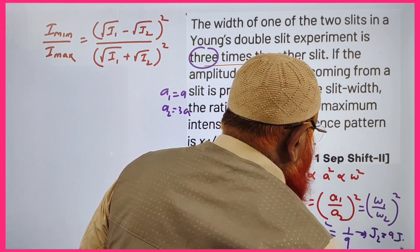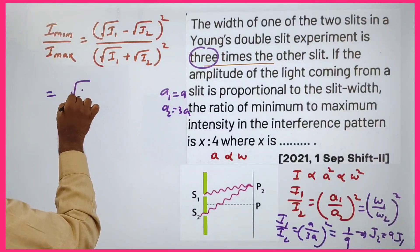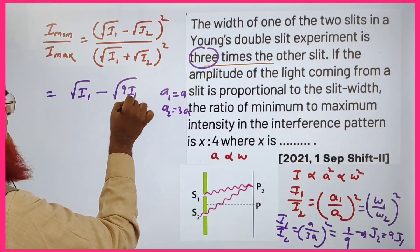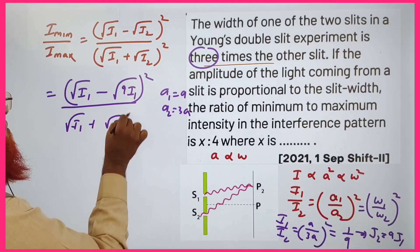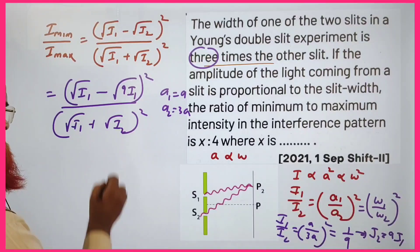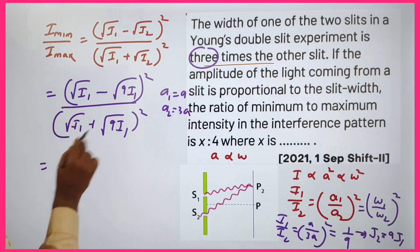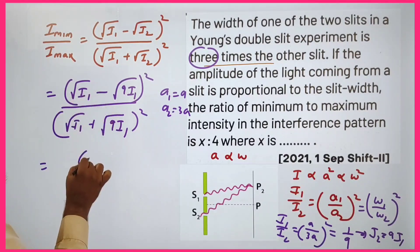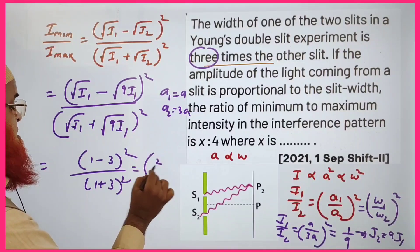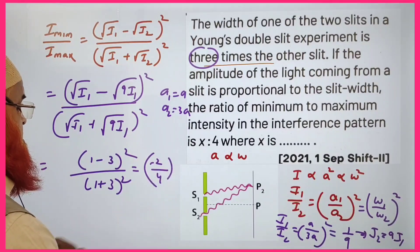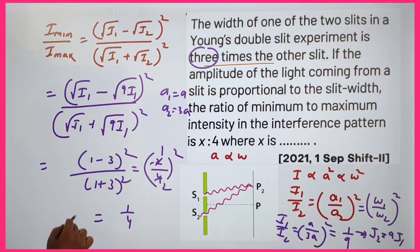Substituting I₂ = 9·I₁ into the formulas: I_min = (√I₁ - √I₂)² = (√I₁ - 3√I₁)² = (-2√I₁)² and I_max = (√I₁ + 3√I₁)² = (4√I₁)². This gives I_min/I_max = 4/16 = 1/4, so the ratio is 1:4.